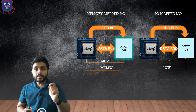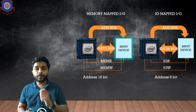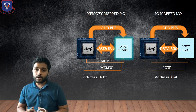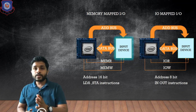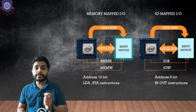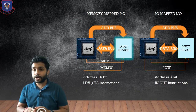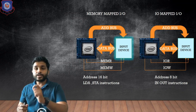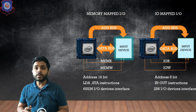Now let's quickly see the differences between the two. In Memory Mapped I/O, the address of the input/output device will be 16 bits long, whereas in I/O Mapped I/O the address will be 8 bits long. Also, in Memory Mapped I/O, since the input device is connected using memory-related control signals, you can use different memory instructions such as LDA and STA — all memory-related instructions can be used. In I/O Mapped I/O, only two instructions can be used: IN and OUT, which are dedicated for input/output operations.